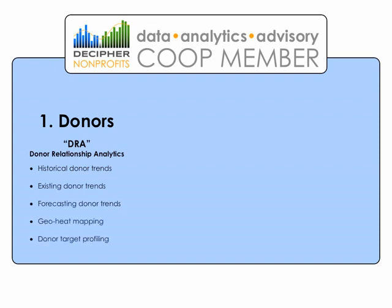Gaining valuable insight into donorship can be more easily accomplished through what we call DRA, or Donor Relationship Analytics. This involves analyzing historical and existing donor trends in order to better forecast donor contributions, as well as geographic heat mapping and donor demographic and psychometric target profiling.